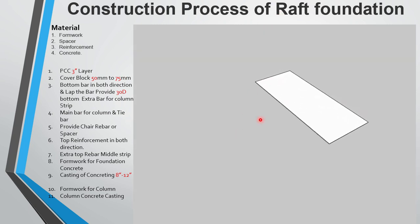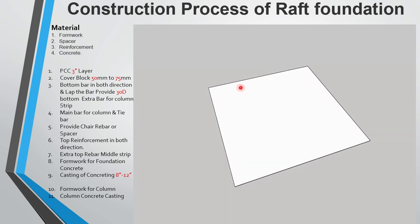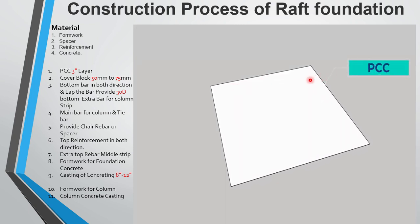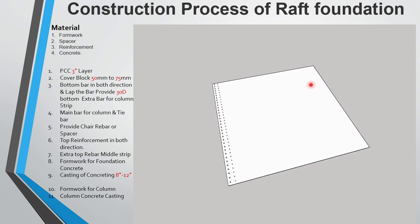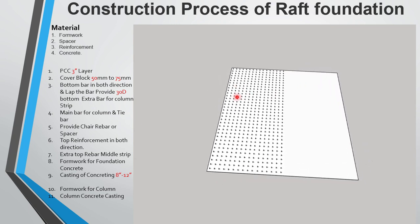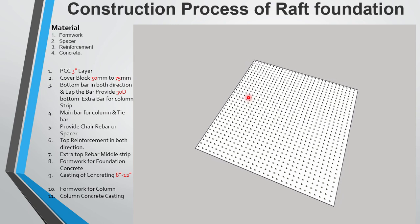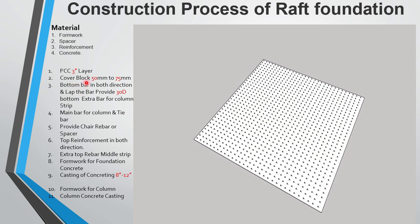In the first step, we provide a plain cement concrete layer, PCC. The thickness is 3 inches. Then we provide the cover block of concrete, with a thickness of 50 mm to 75 mm for the rough foundation.